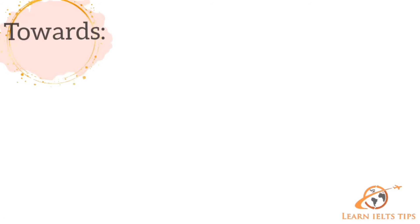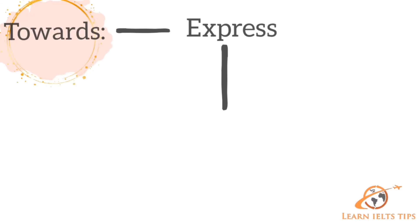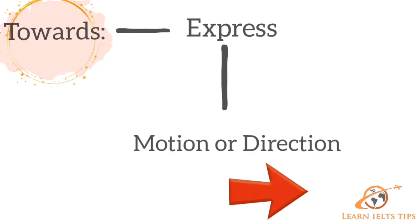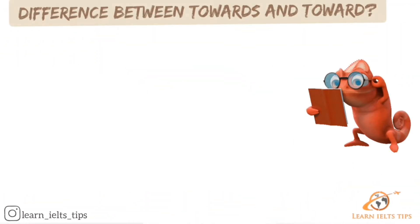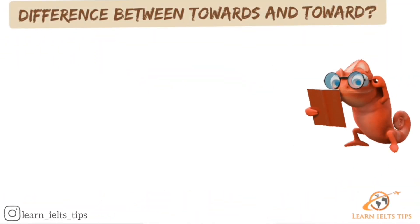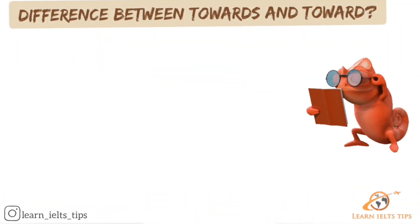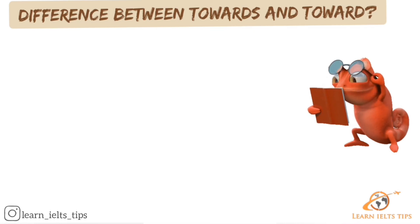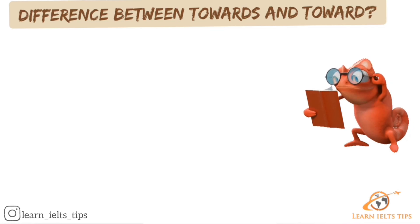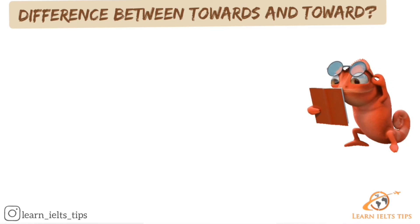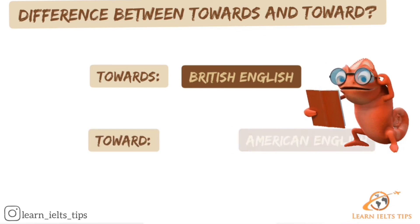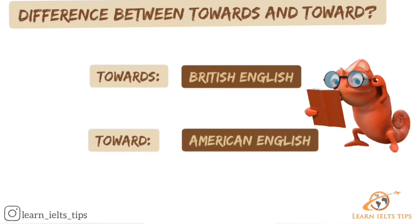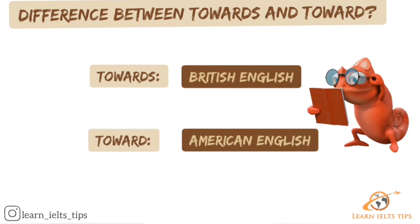Towards is used to express a motion or direction. Sometimes you will see the word toward instead of towards. So what is the difference between towards and toward? Towards is British English. Toward is American English.